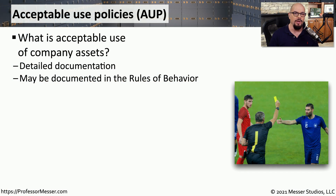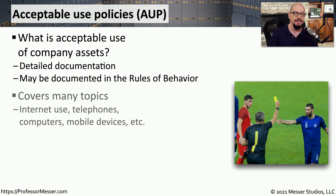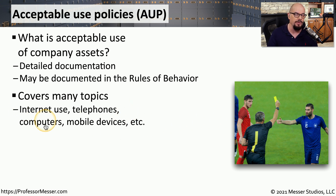Most organizations will have a documented set of rules called an acceptable use policy, or an AUP. This is detailed documentation that covers how all of the different technologies in your environment should be used. This covers your internet use, your telephones, computers, mobile devices, tablets, and anything else that is technology in your company.